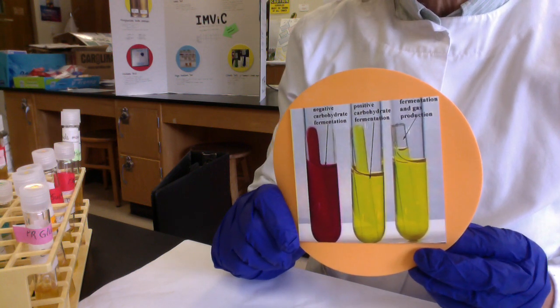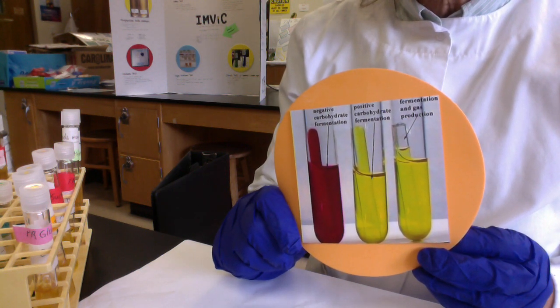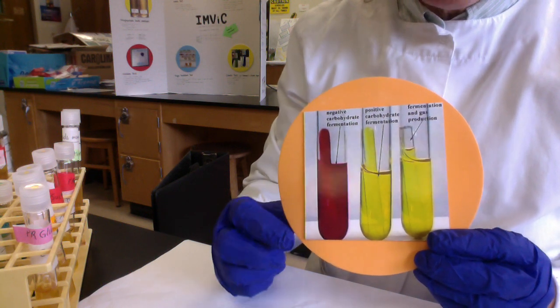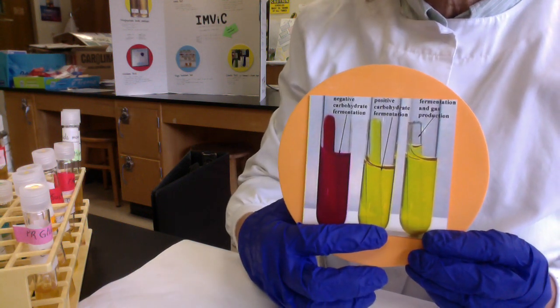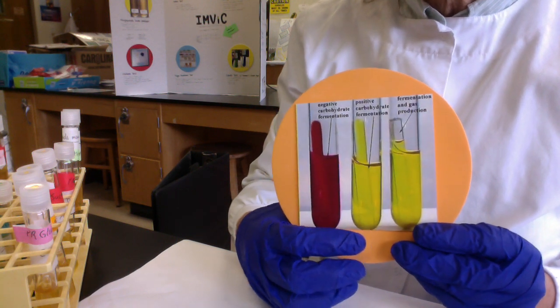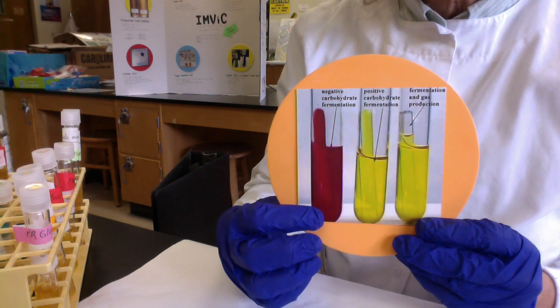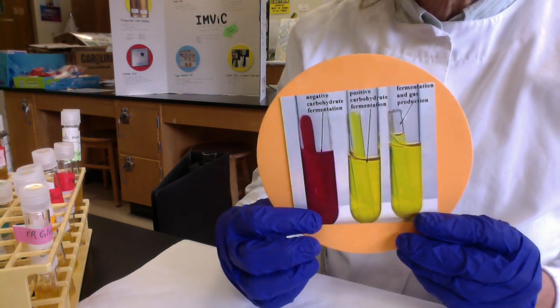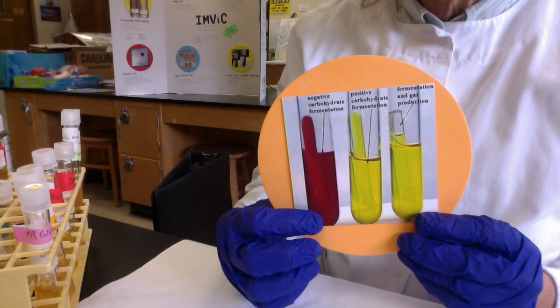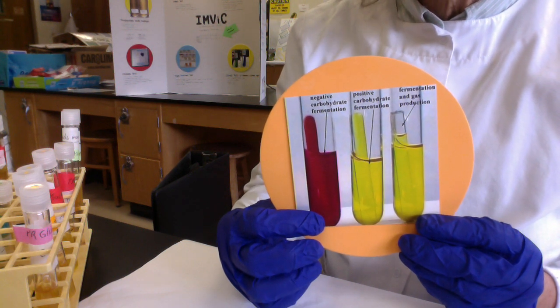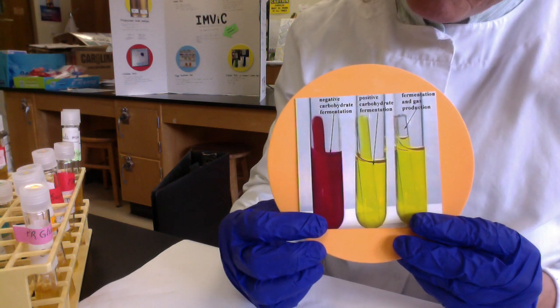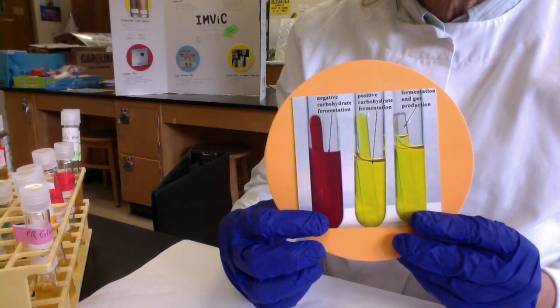If the microbe can ferment the sugar, it will make acids, the pH will drop, and the phenol red indicator will turn yellow. Yellow is positive for sugar fermentation. If the microbe can't ferment the sugar, it has to use amino acids as a carbon and energy source. When they release the amino group as ammonia, ammonia acts as a weak base, the pH goes up, and the phenol red turns dark red.